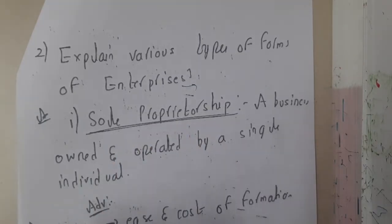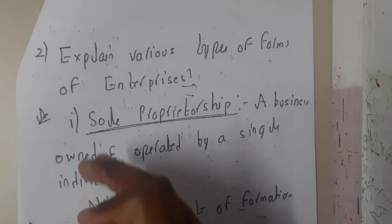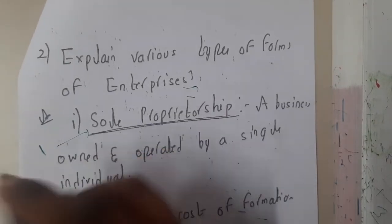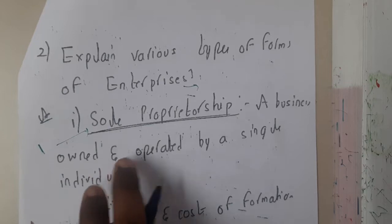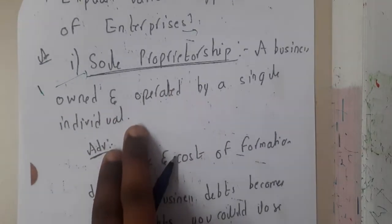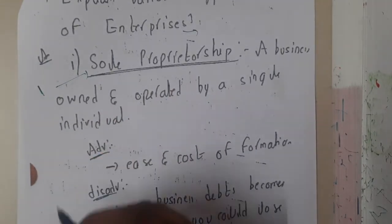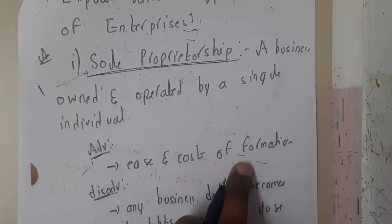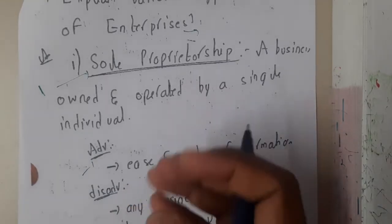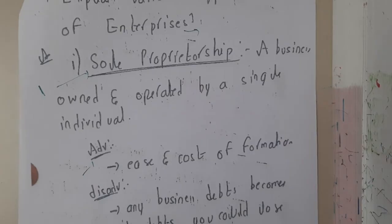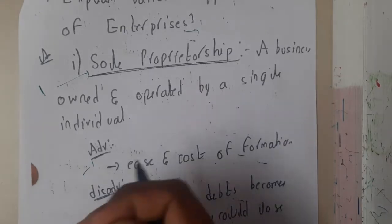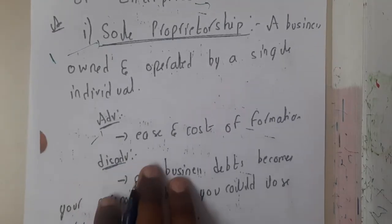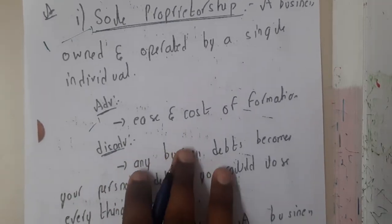The first type is sole proprietorship. From the name itself, solo means a single individual — a business owned and operated by a single individual. The major advantage here is ease and cost of formation. Basically, everything will be done by him only, so there will be no misunderstandings, no issues, no problems.